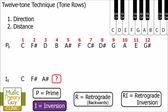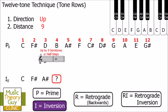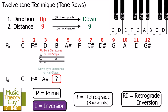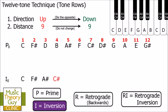To work out the fourth note of I0, we compare the third and fourth notes of P0. The direction this time is D going up to B. Counting on the keyboard from D: one, two, three, four, five, six, seven, eight, nine — nine semitones or half steps up to B. We do the opposite direction and go down, keeping the distance the same at nine semitones. Going down nine from A sharp: one, two, three, four, five, six, seven, eight, nine — we end up at C sharp. So the fourth note of I0 is C sharp.